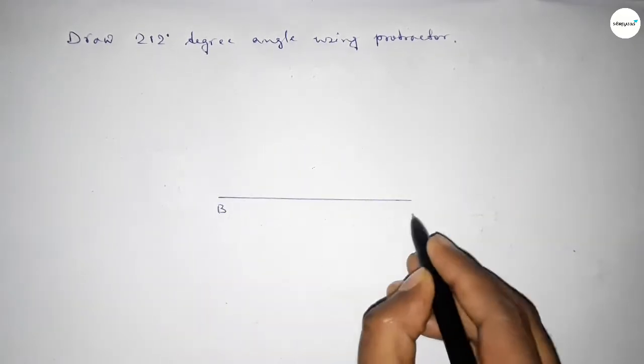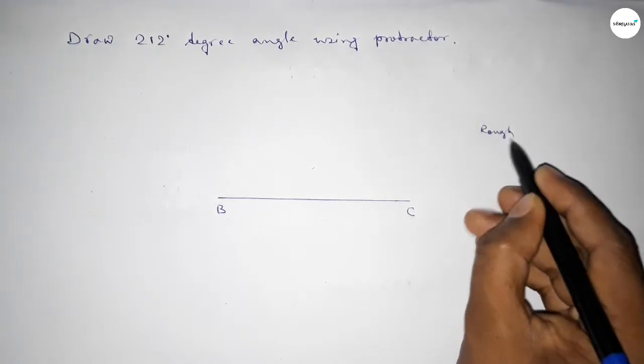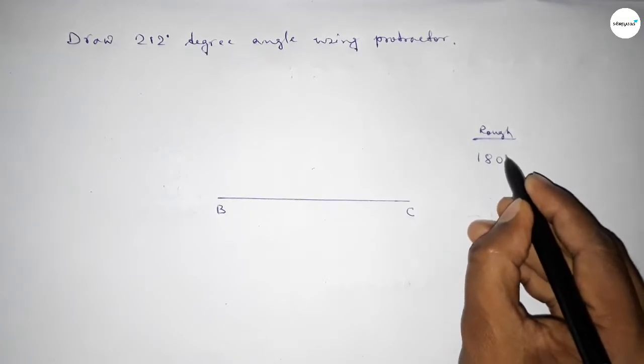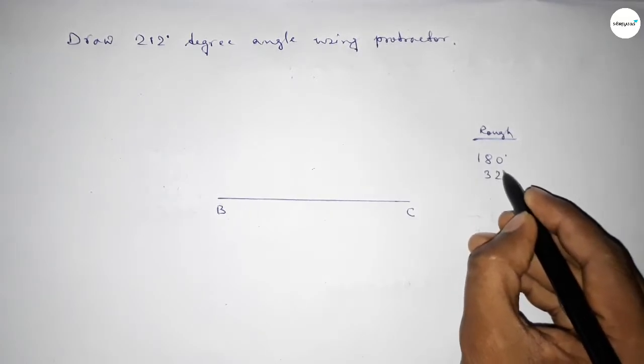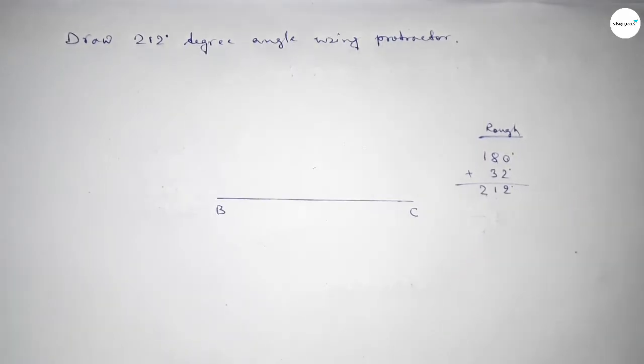Taking here point A, B, and here C. Now roughly discussing some calculation here. So if we add 32 degree angle with 180 degree, then we can get 212 degree.